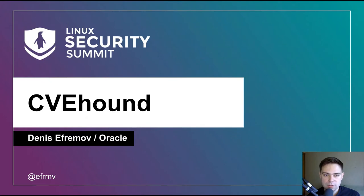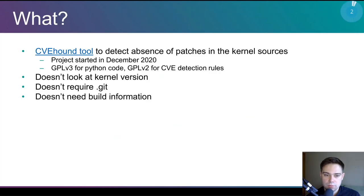Hello, my name is Denis Efremov and welcome to my presentation — a tool presentation. The tool is named CVHound. It automates the checking of kernel sources for missing fixes of known CVEs.